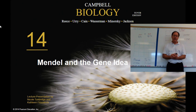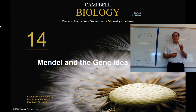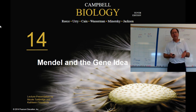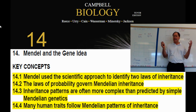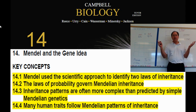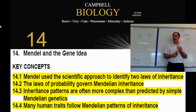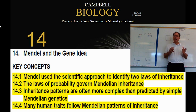The title of chapter 14 is called Mendel and the Gene Idea. He's the guy that had the idea for this. Of course, he didn't know about DNA — it was 100 years before the structure of DNA was discovered. He called them factors, but he knew something was given from the parents to the offspring.